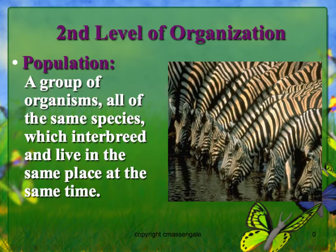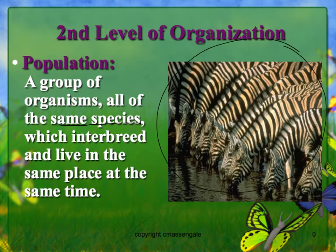The second level of organization is called a population. This is a group of organisms, all of the same species, which interbreed and live in the same place at the same time. For example, a herd of zebra, or a group of monkeys living in the rainforest, or a group of deer that are living in the same place at the same time.